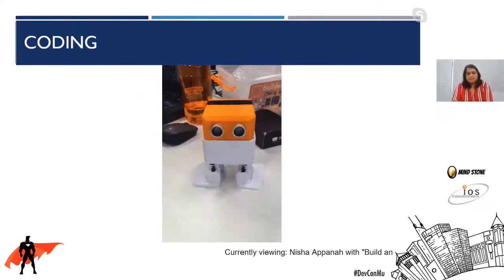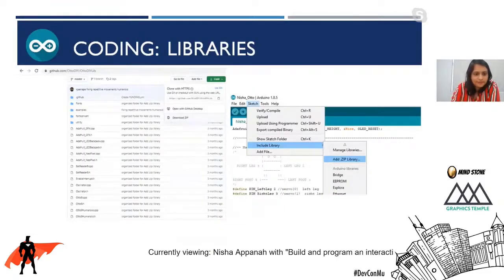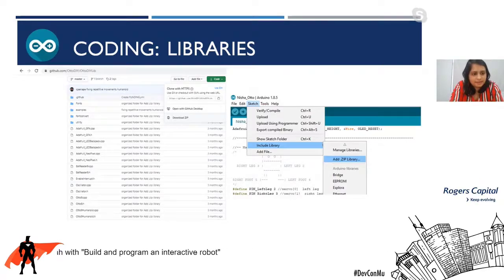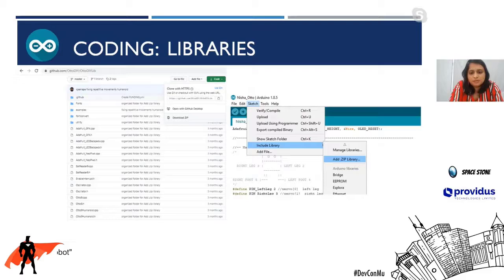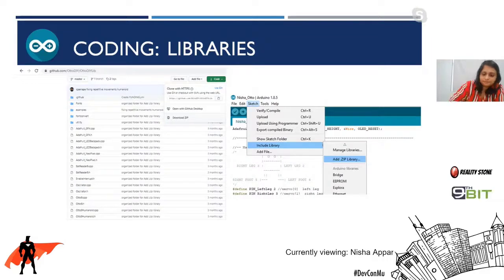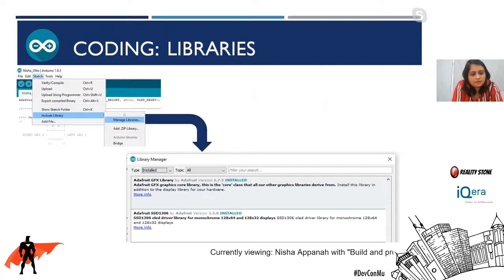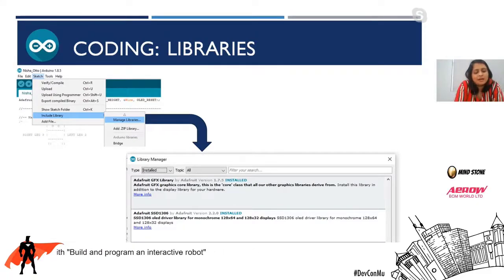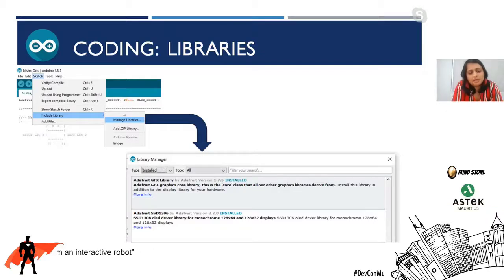Let's get into the coding side. For the coding you'll have to download some libraries. It comes with Otto DIY libraries that you can get on GitHub — download the zip source and then go into the Arduino IDE and include the zip library as shown in the screenshot. The next library you'll need is from Adafruit, specifically the Adafruit SSD1306 — this is used for the OLED display and drawing on it. You include it by going to Manage Libraries and selecting the library from there.